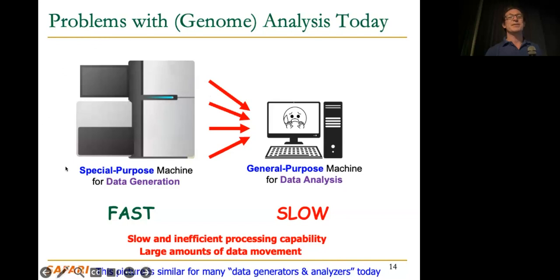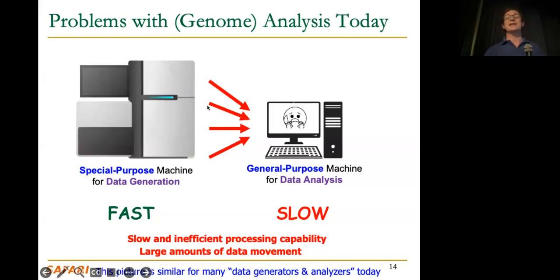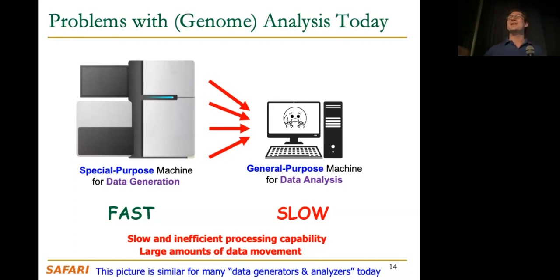To generalize this: we have special-purpose machines that are extremely good at data generation — the genomics sequencer, or Illumina — they're extremely fast and specialized, but then we need to move the data far away to do analysis using general-purpose machines not specialized for the data or application. As a result it's slow — both because of the data movement and the inefficient processing capability. This picture is similar for many data generation engines: video cameras, web click data, and more.